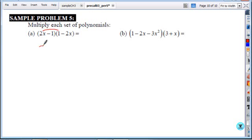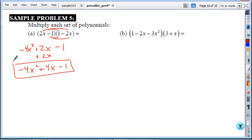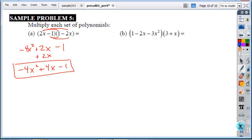First terms you get 2x, the outer terms are negative 4x squared, so notice I'm going to write that in front. My inner terms are negative 1, my last terms positive 2x, and so now when I combine down my columns I get negative 4x squared plus 4x minus 1. And do make sure you write all your answers in standard form when you're submitting these questions.